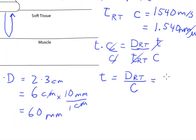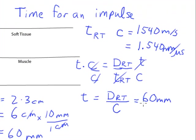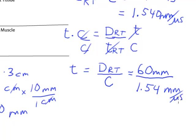So now I can plug in my round trip distance of 60 mm and use my speed of propagation of sound of 1.54 mm per microsecond.